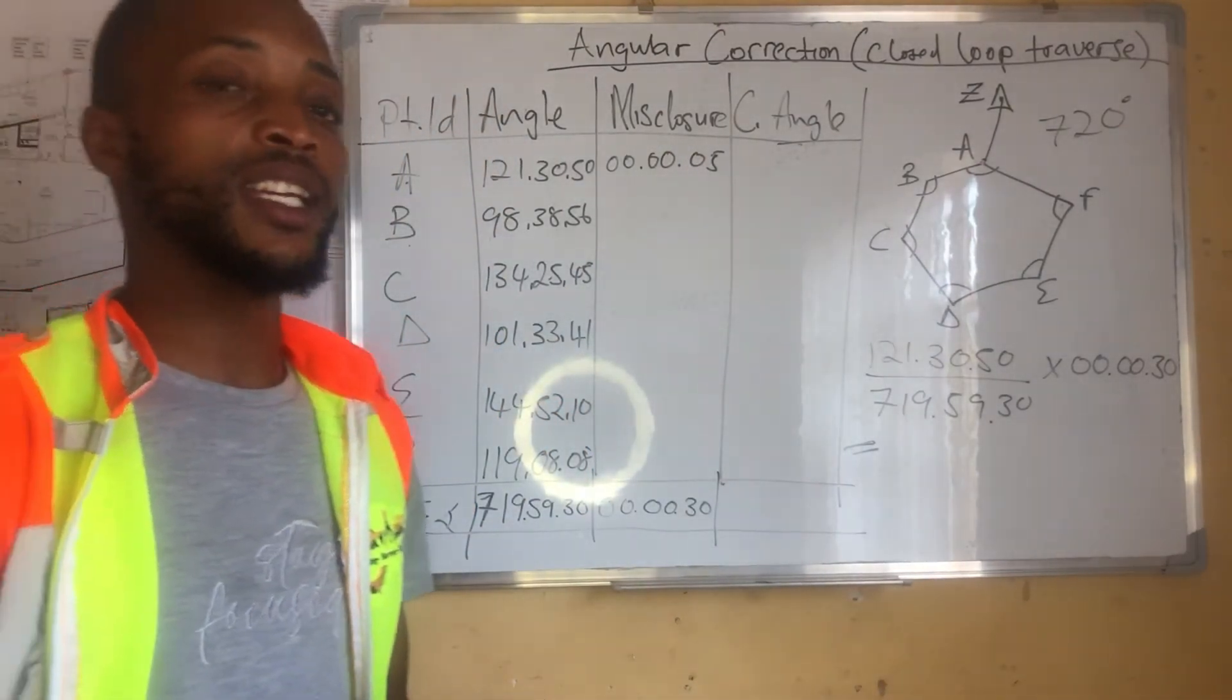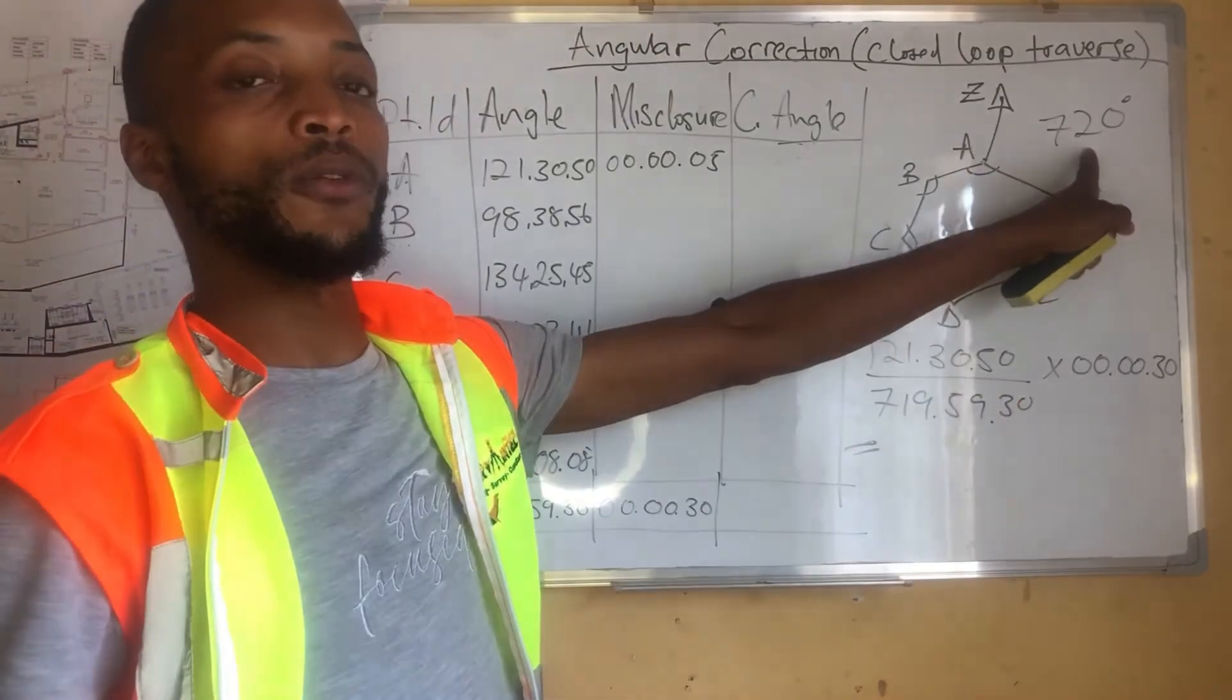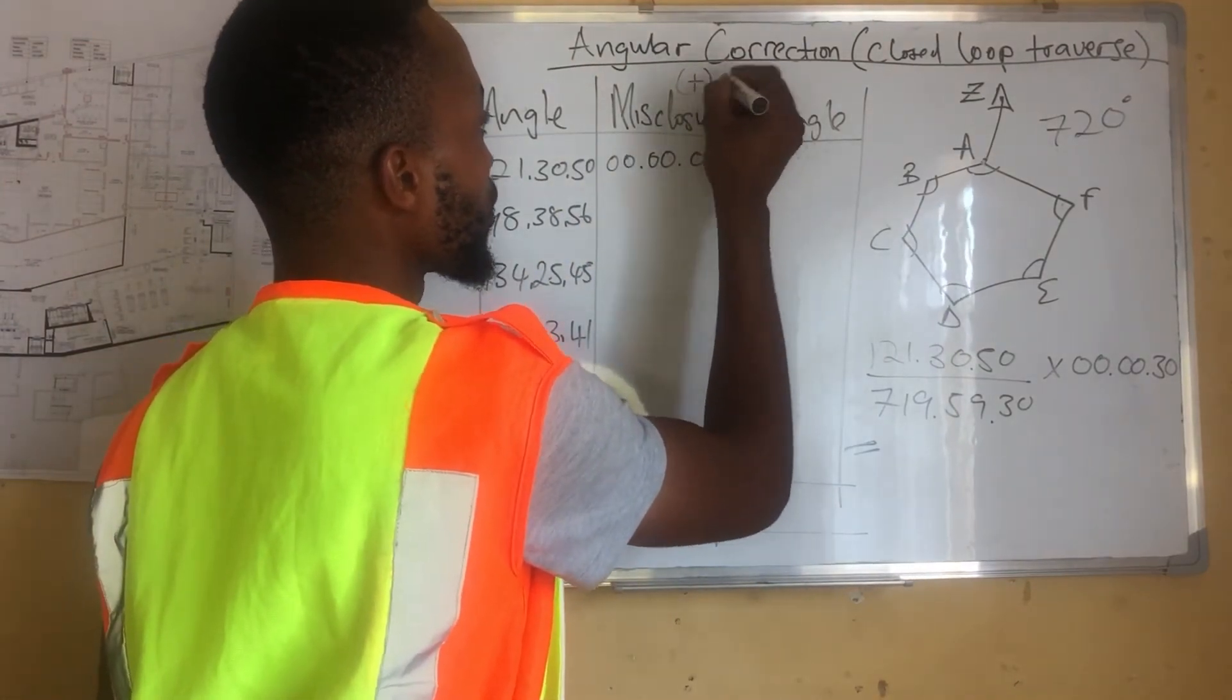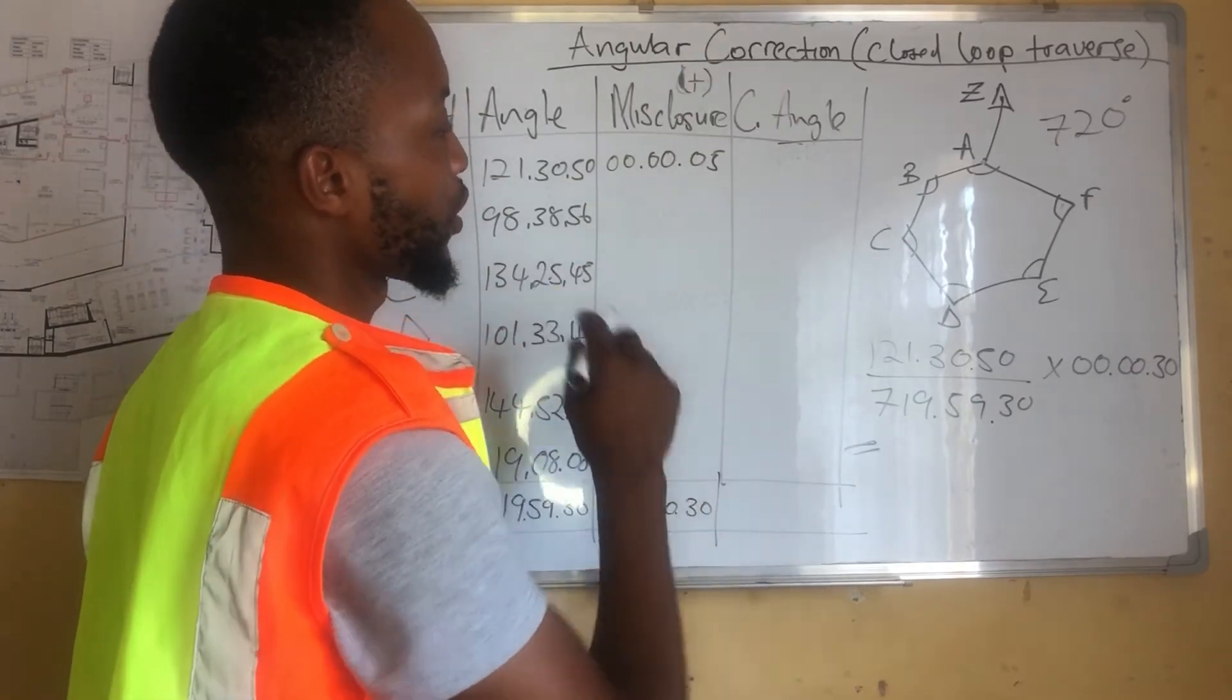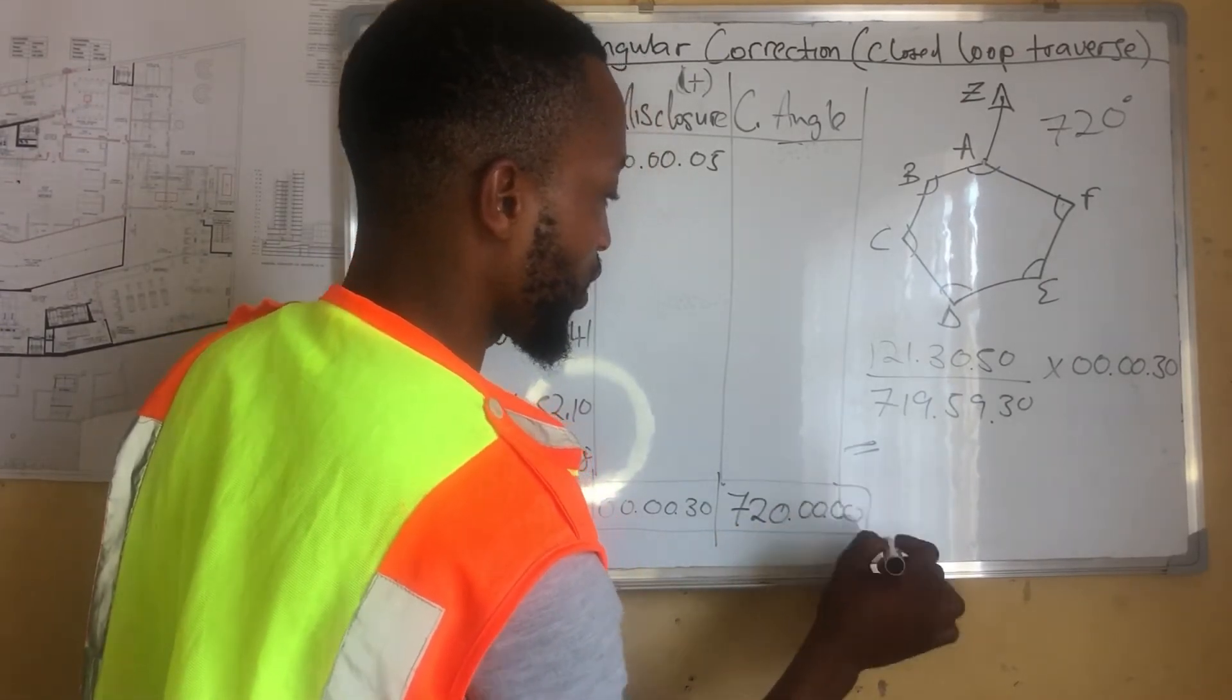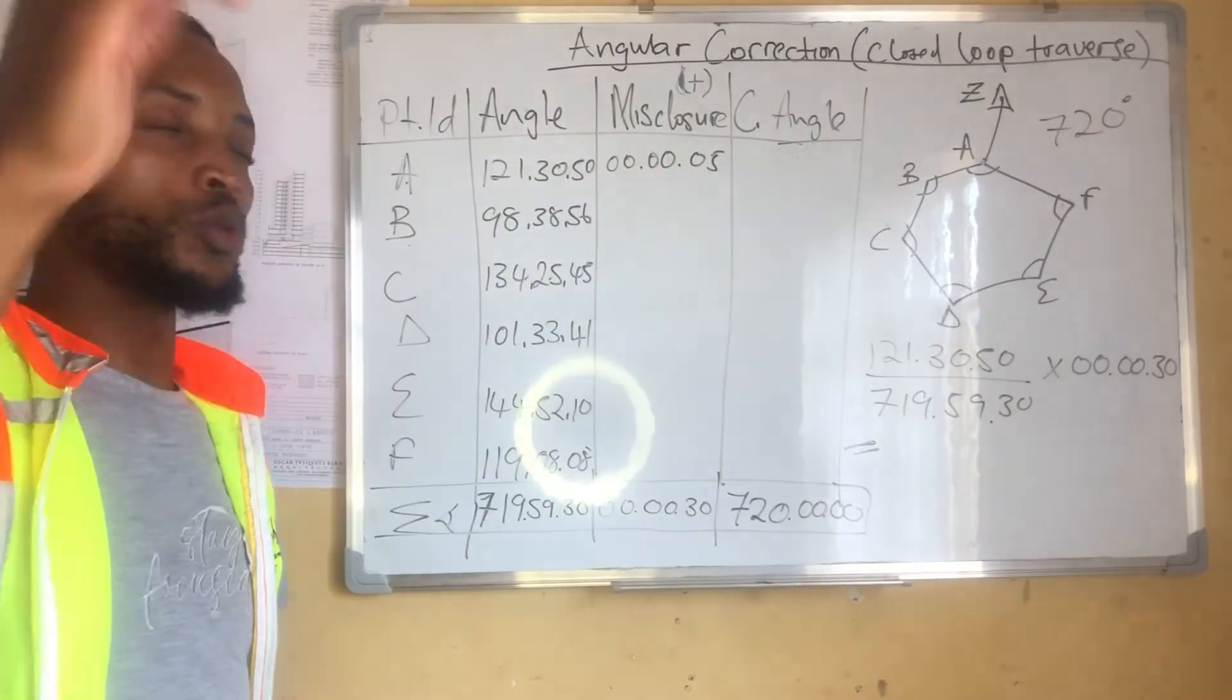Since I said that our misclosure is 30 degrees, 30 seconds less on 720, it means that we need to add 30 seconds. We need to add those 30 seconds to our angles for us to get the 720. For us to get this 720. This one is 5 seconds.